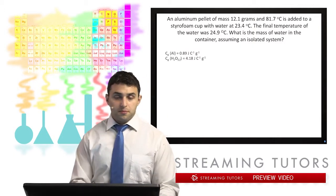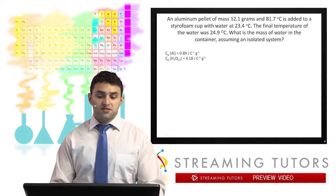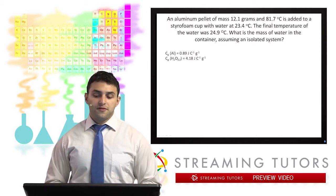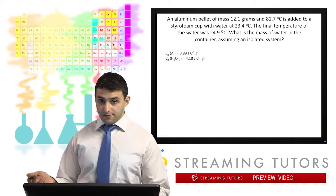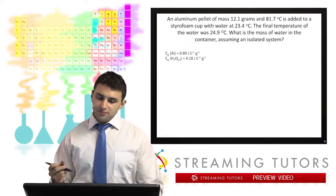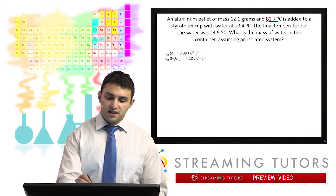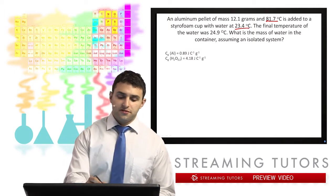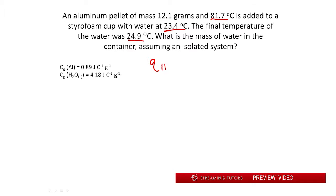We're going to use that to look at a problem. An aluminum pellet of mass 12.1 grams at 81.7 degrees Celsius is added to a styrofoam cup with water at 23.4 degrees Celsius. The final temperature of the water is 24.9 degrees Celsius. What is the mass of the water, assuming an isolated system? The aluminum pellet starts at 81.7, the water starts at 23.4, and the equilibrium temperature is 24.9. So the aluminum lost heat and the water gained heat — the heat gained by water equals the heat lost by aluminum.